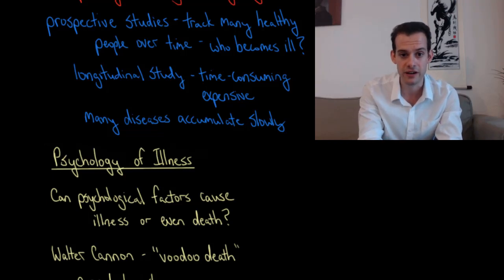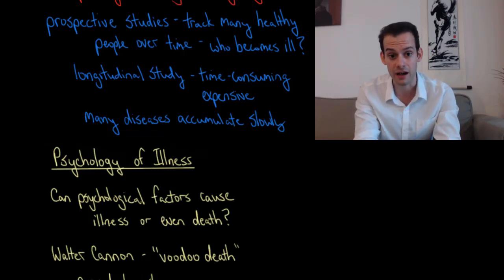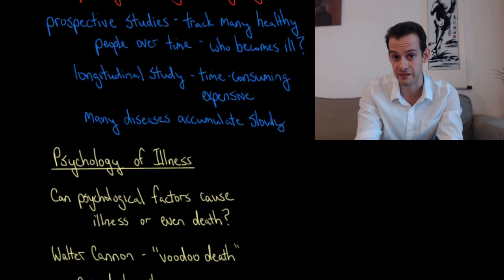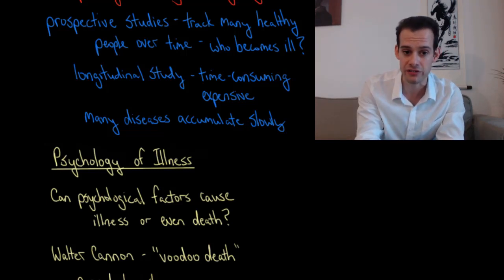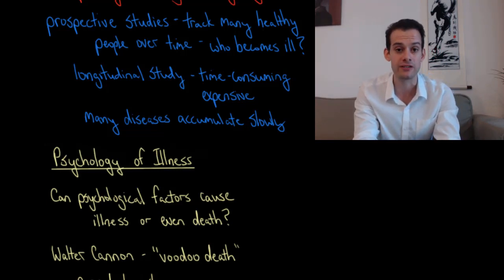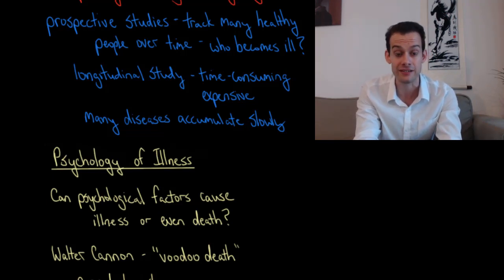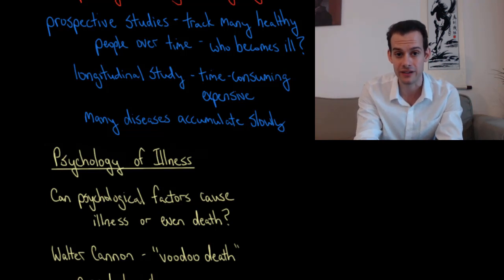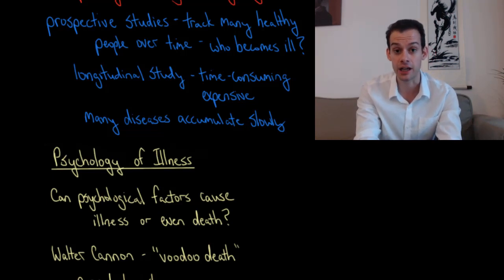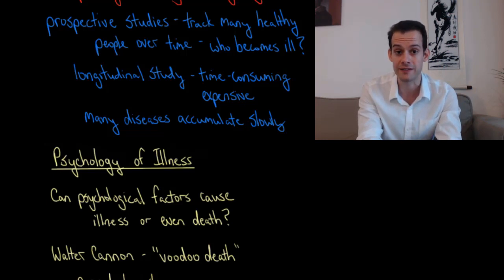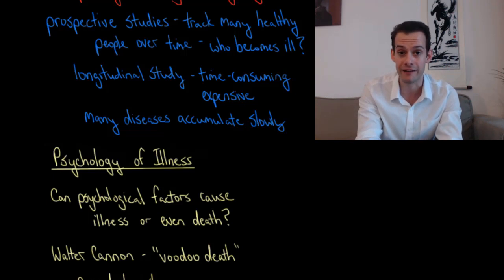The problem with prospective studies is that they're very time-consuming — these longitudinal studies take a very long time and are very expensive. The illnesses we're most interested in, like heart disease or cancer, accumulate slowly over decades, which means our studies have to last for decades. Meanwhile, many of the acute illnesses that develop in much shorter periods are ones we already understand quite well and can treat effectively.